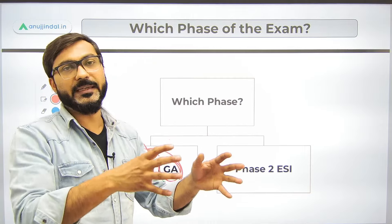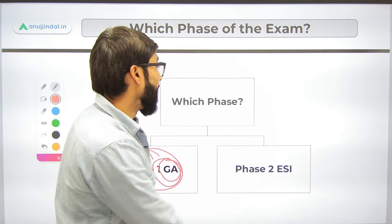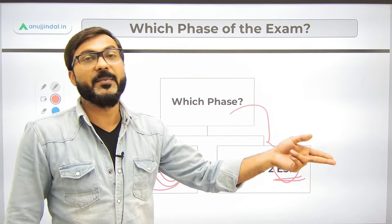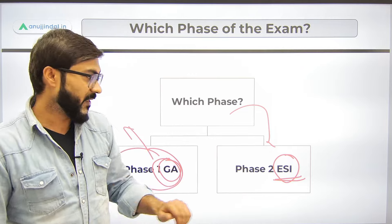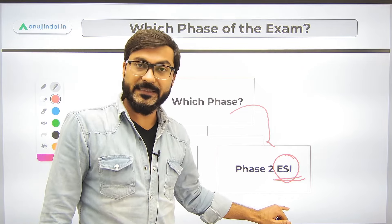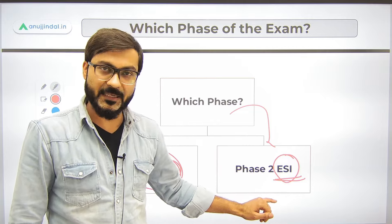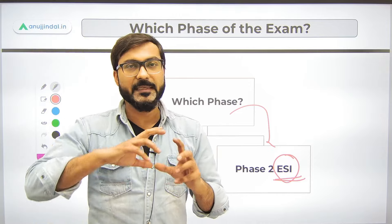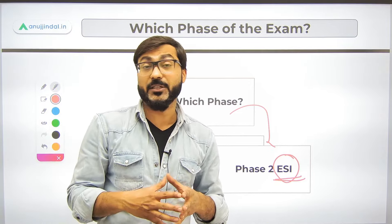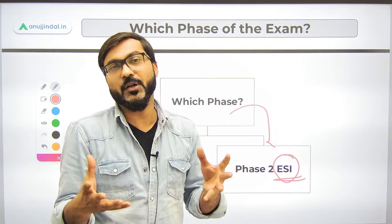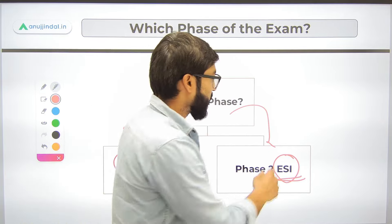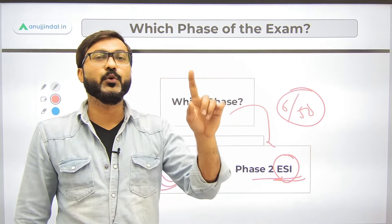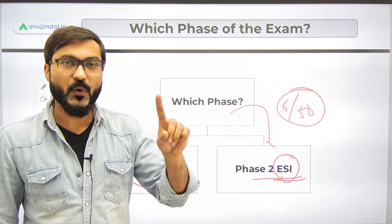Questions were asked from all dimensions and sectors in Phase 2 as well — in ESI objective and descriptive. In 2023, three questions of two marks each — that's six marks out of 50 — were from indices and reports. ESI objective is difficult to score in because there is no defined syllabus; they ask from current affairs. Six marks from indices and reports is a very big number.